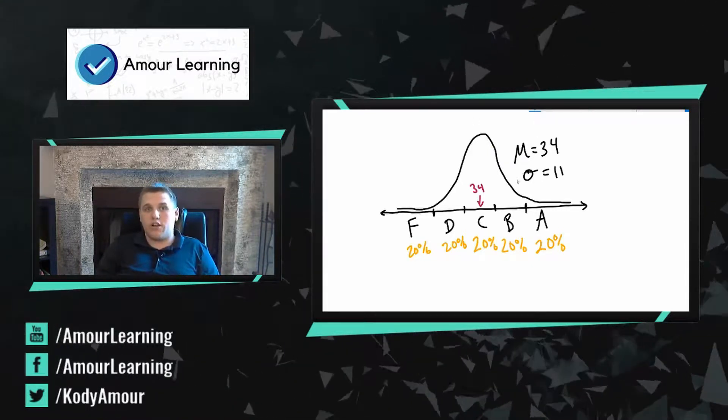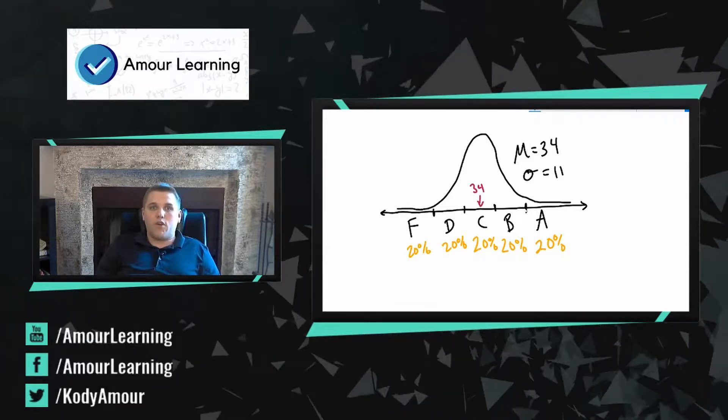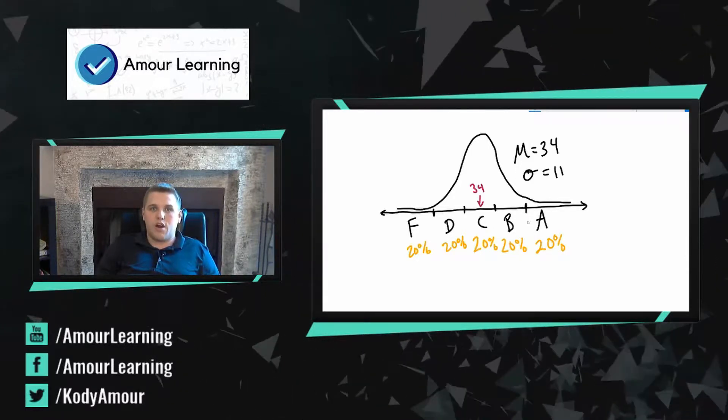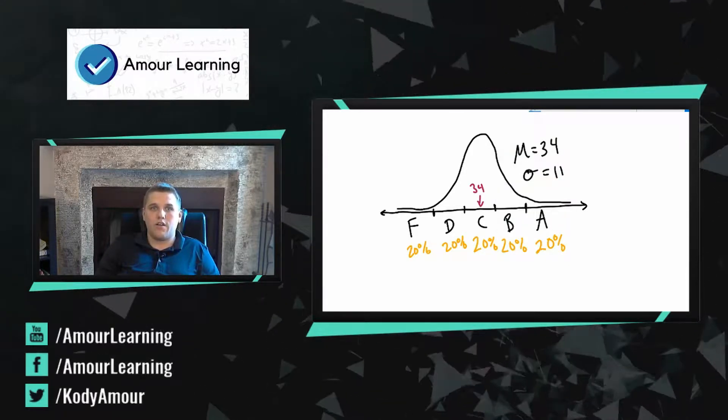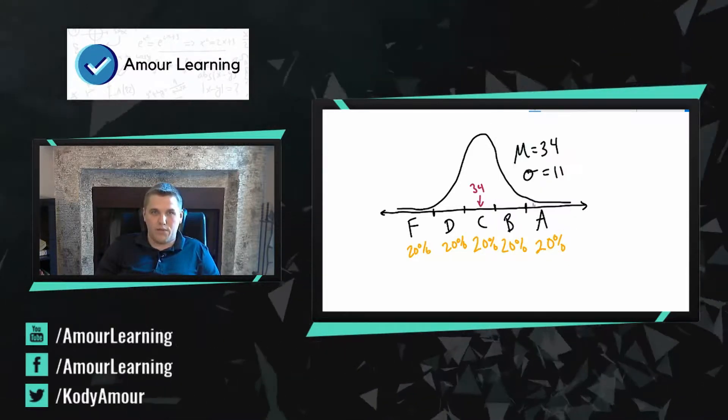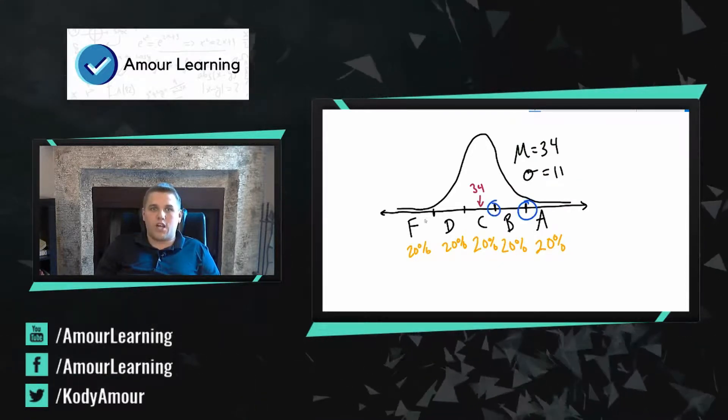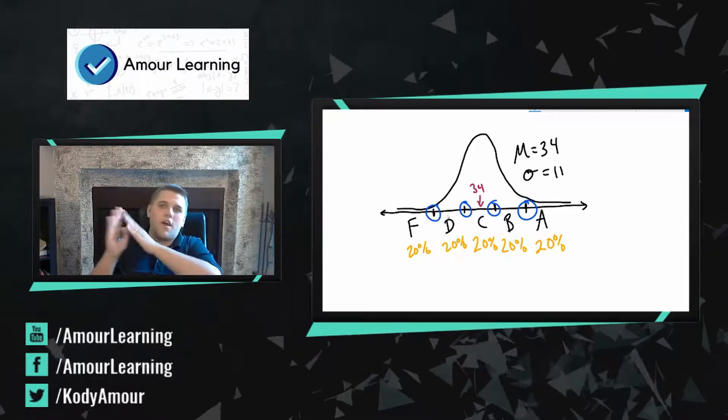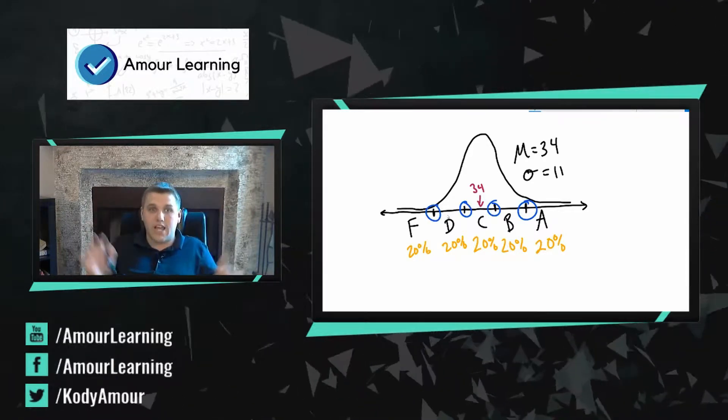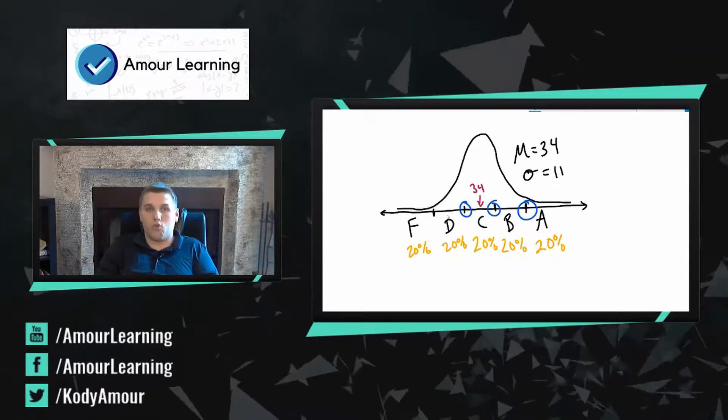In particular, we would want, like if we were trying to figure out what these numbers are, because this is kind of what's the important part here. Let me use a different color than that, like blue. We're trying to figure out what are these cutoffs right here. Because if we can figure out those cutoffs, then we can immediately have all of our segments for our letter grades.